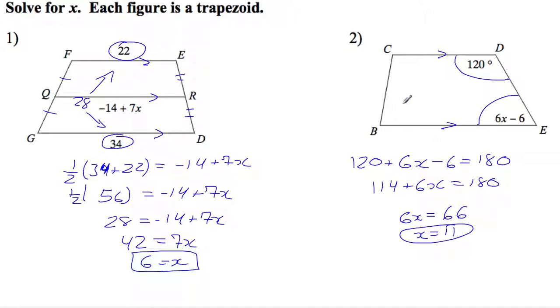So again, with trapezoids, these properties with parallel lines really come into play, as with any other parallelogram, rhombus, square, rectangle, anything like that. So always look for those parallel sides and be aware of what a median is, what a midsegment is, and that property involving trapezoids.